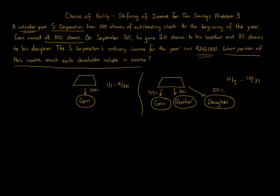When allocating items of income, loss, deduction, or gain to different owners during the year where percentages change, we use a daily allocation approach — a daily method. And unless you're told it's a leap year, we assume there are 365 days in the year. For a leap year it would be 366, with February being the month that differs.